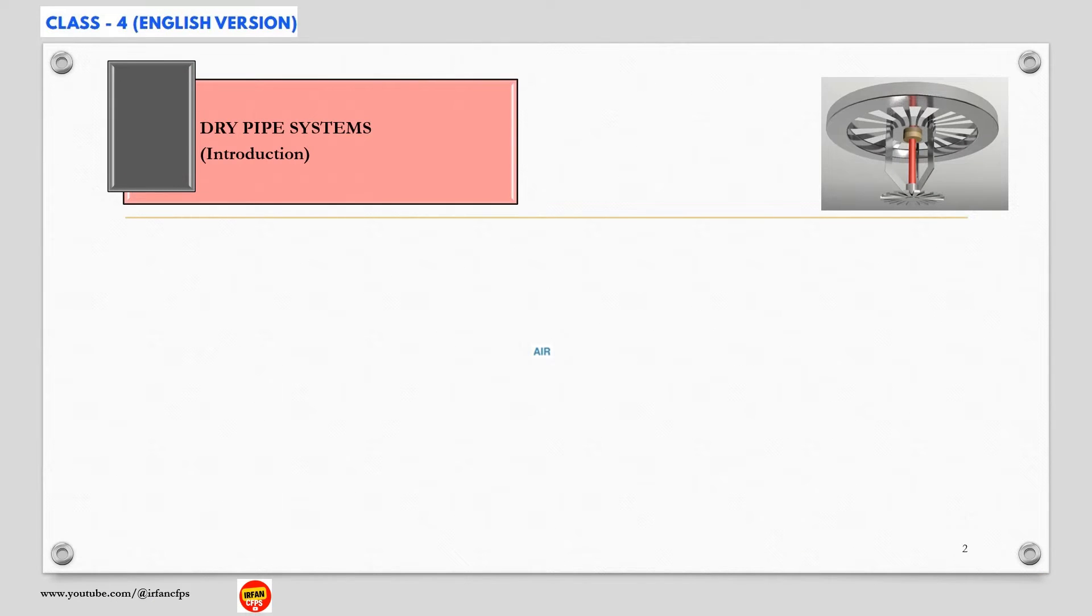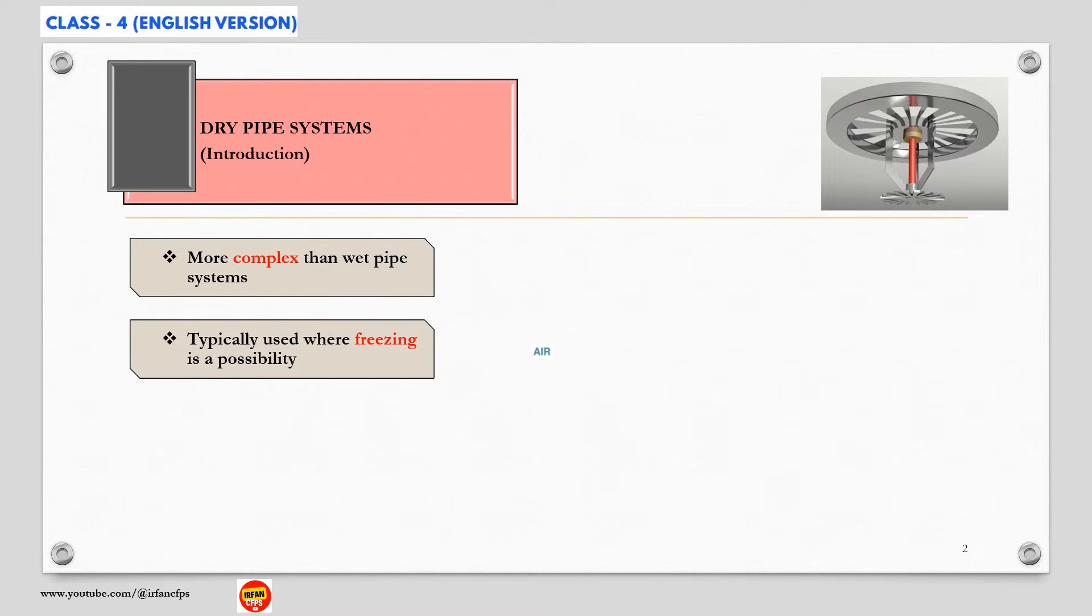Let's start with the introduction of dry pipe systems. Dry pipe systems are more complex than wet sprinkler systems. These are also water-based fire protection systems only. They are the most common choices for systems where freezing is a possibility.